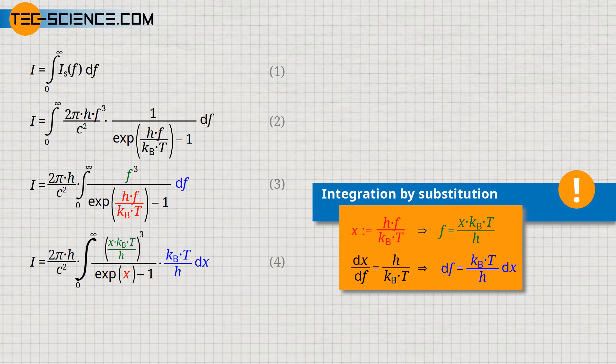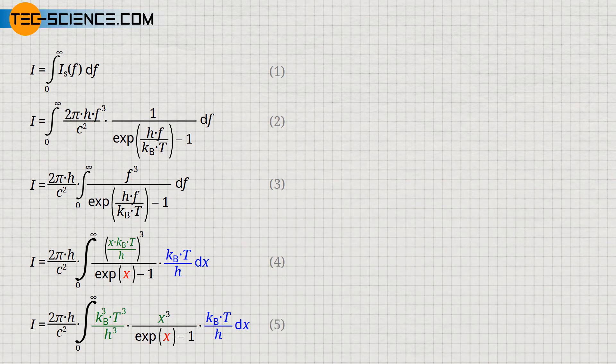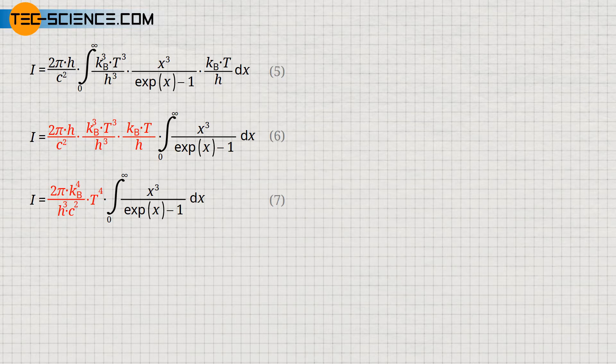We can simplify equation 4 a little bit with the help of the law of exponents. Looking at equation 5, we again get constant quantities which can be written before the integral. We can summarize these quantities with the other constants, giving us the red-marked integral which has to be solved. This integral cannot be solved easily in a conventional way; however, a look into a mathematical formula collection provides the result: pi to the power of 4 divided by 15.